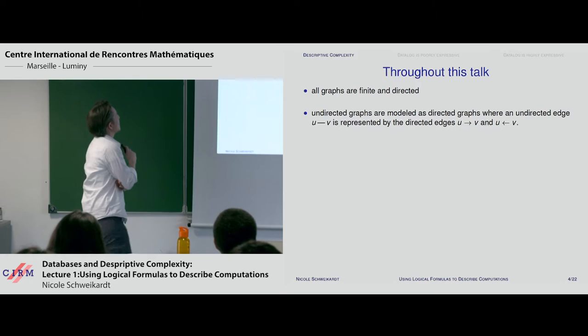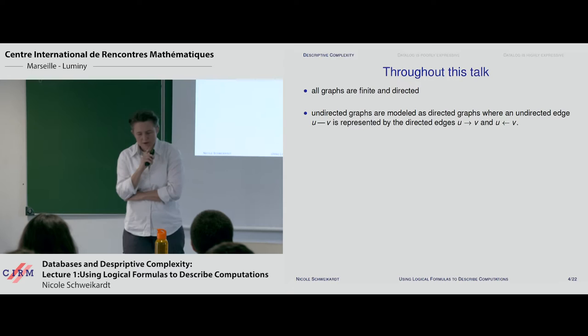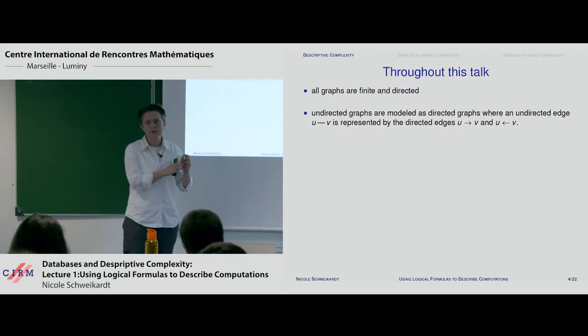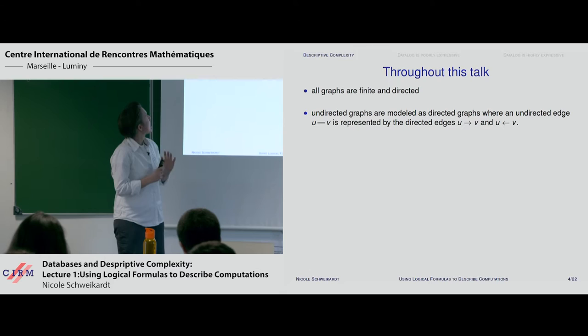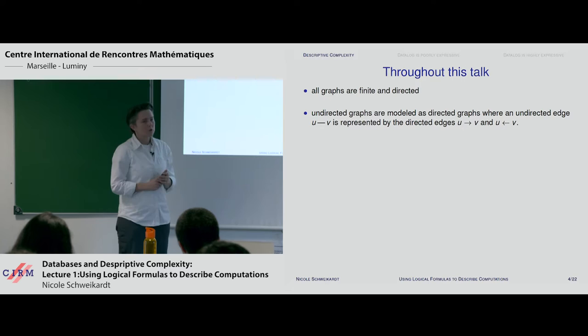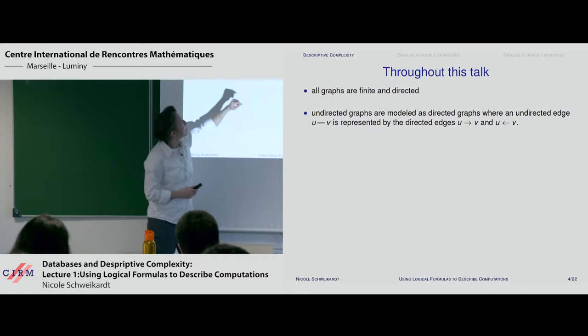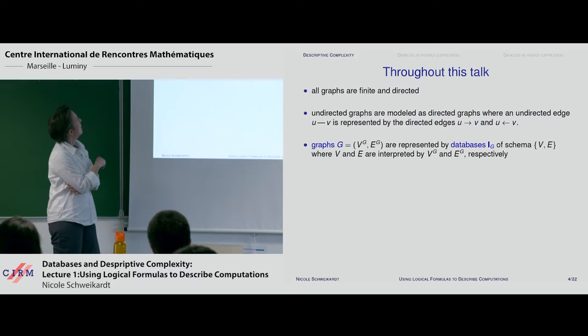Let's start with an introduction on descriptive complexity. For me, graphs are the simplest examples of databases. Often I will talk about graphs, but everything I say about graphs also holds for databases. Graphs in this talk are finite and directed. Sometimes I draw pictures where edges go both ways — that means you have the edge in both directions, when u and v are nodes of the graph.